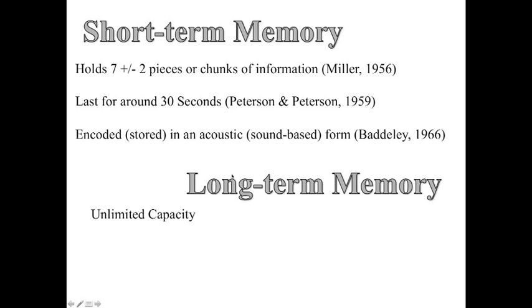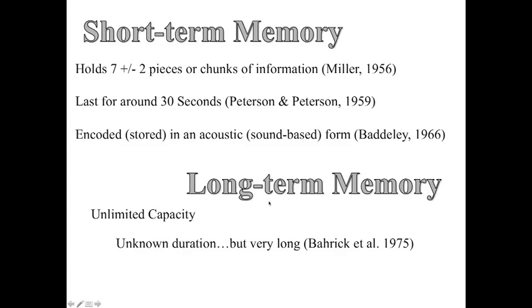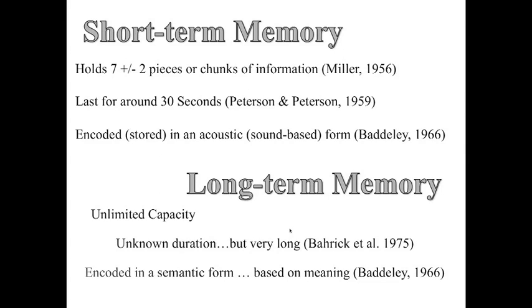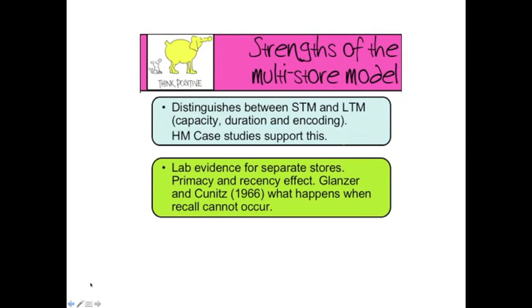Long-term memory has unlimited capacity — we can just store loads of stuff in our long-term memory. We're not sure how long it stores it for, but it's probably a very long time, and this was part of a study conducted by Bahrick in 1975. Encoding in long-term memory is in a semantic form, based on meaning — that's Baddeley 1966 again, with results based on both short-term and long-term memory. A strength of the model is that it distinguishes between short-term and long-term memory, showing differences in capacity, duration, and encoding.